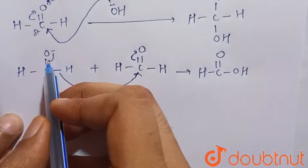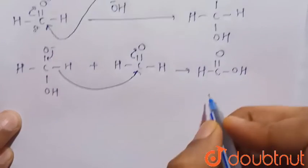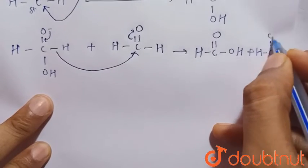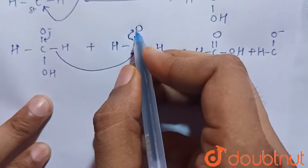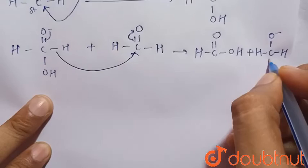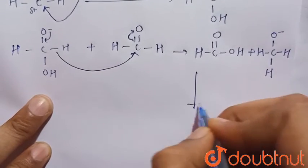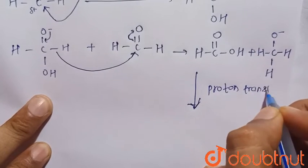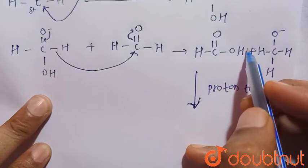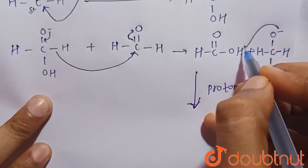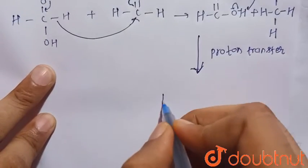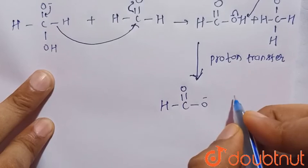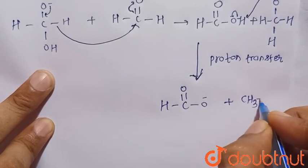This negative charge has come here, so it will become C double bond O. Plus, this bond breaks toward oxygen, so it becomes H-C-O minus H, and there is also H. Now there will be the fast proton transfer, that is this proton taken from here. So there is formation of H-C double bond O minus plus CH3OH.